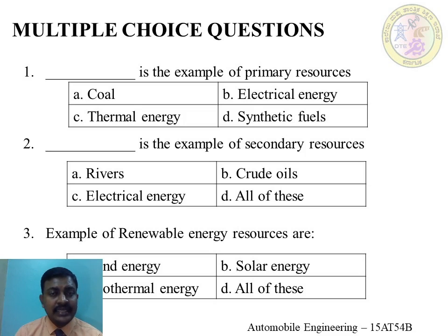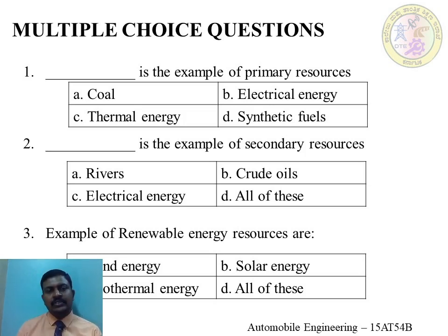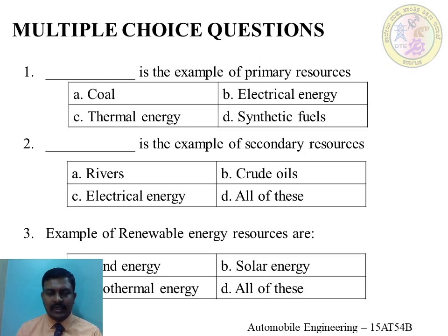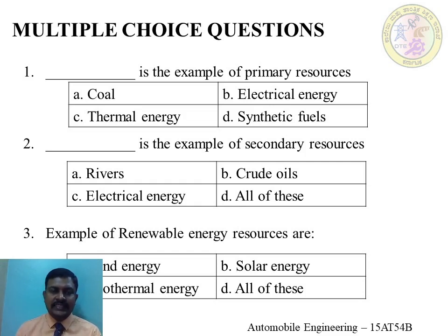Primary resources are those available in nature where some sort of transformation is required. The options are: coal, electrical energy, thermal energy, and synthetic fuels. Electrical energy, thermal energy, and synthetic fuels are wrong answers. The correct answer is coal, because coal exists in nature, is mined, and used later. The right answer is A, coal.